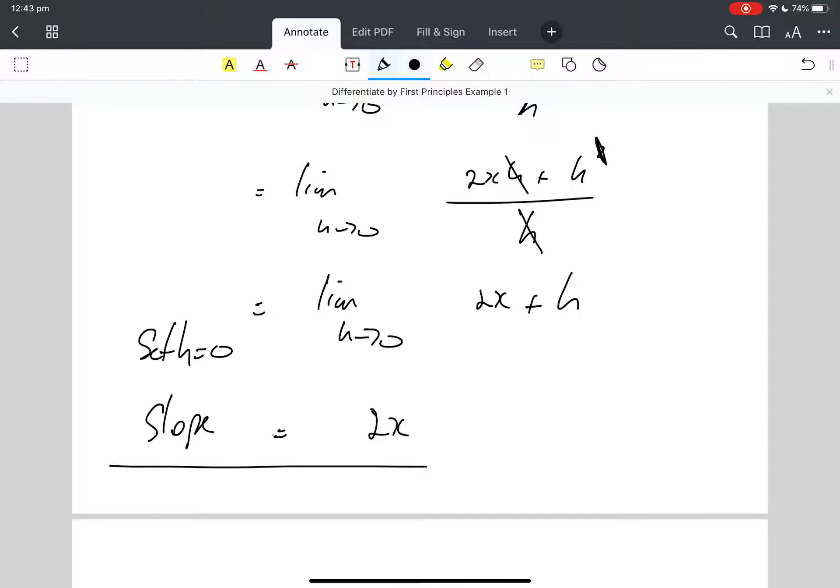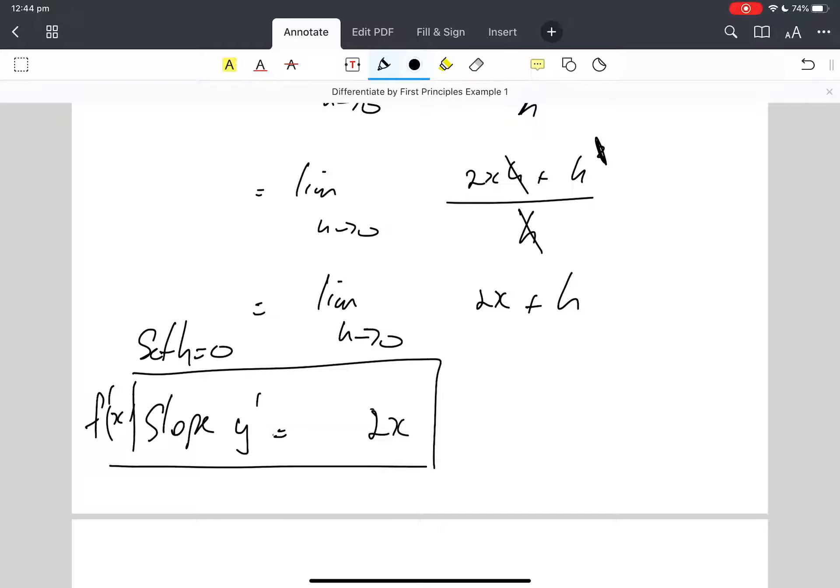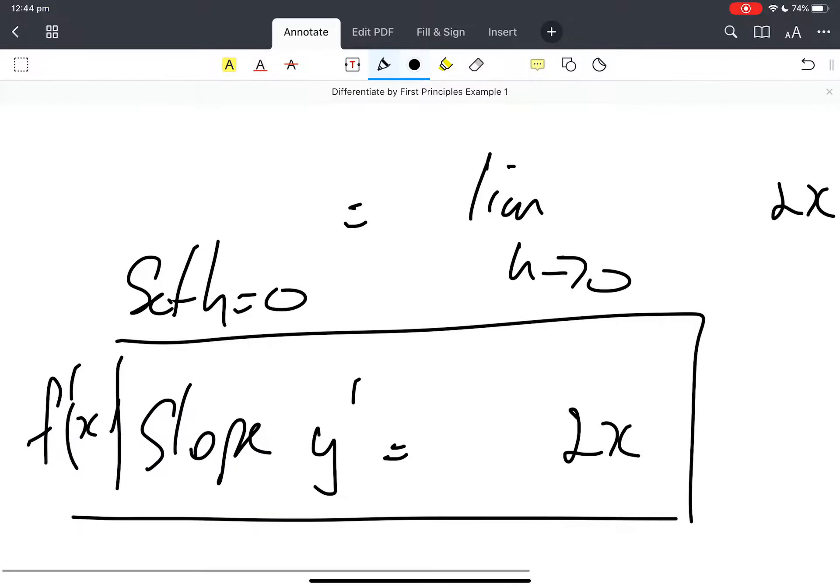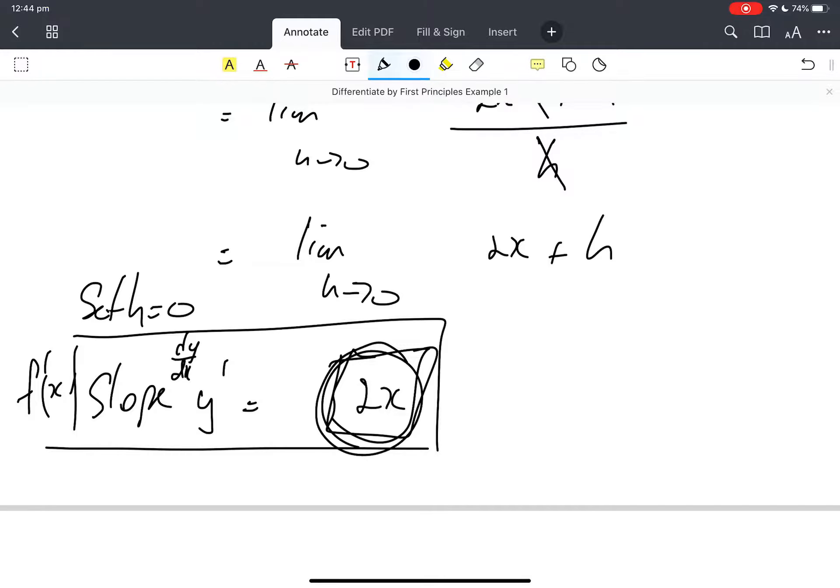And I've got slope equals... This is called a gradient function. Slope, y dash, f dash x, dy/dx, all equal to 2x. It's a gradient function. This 2x tells me the slope.